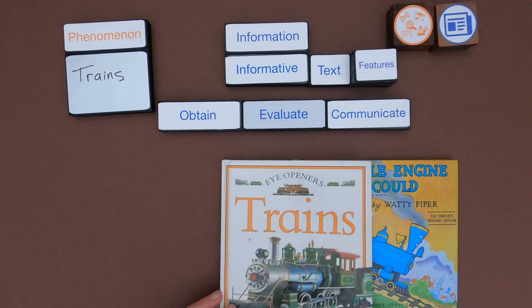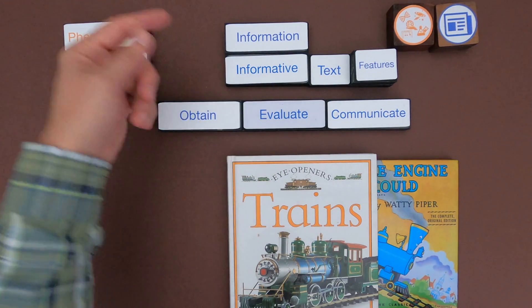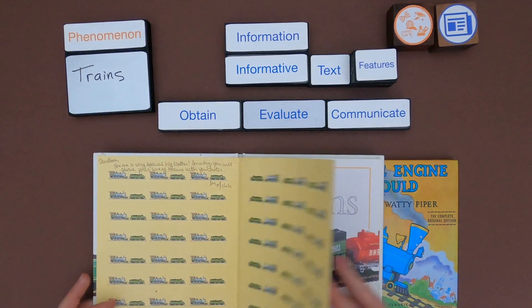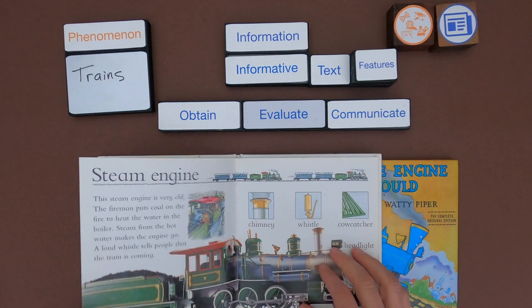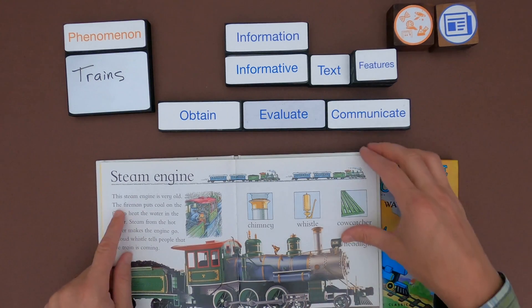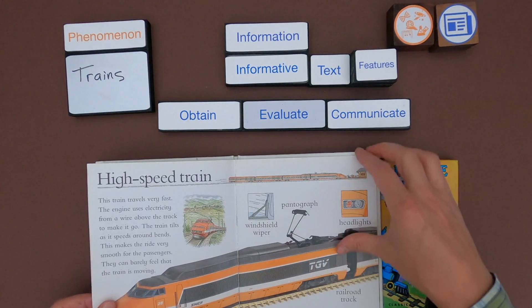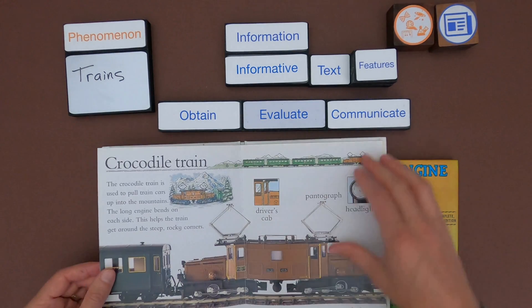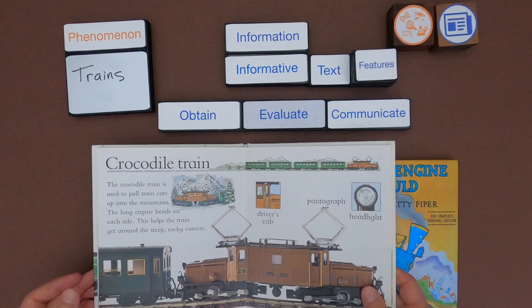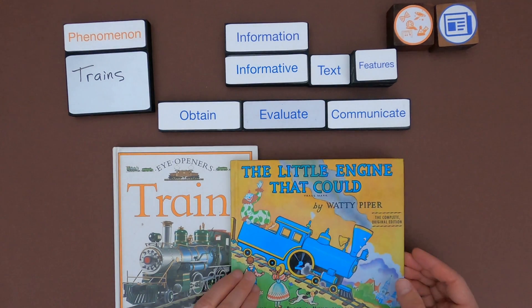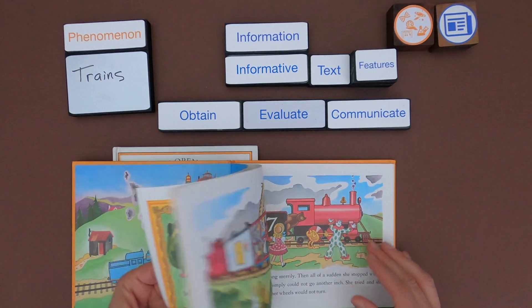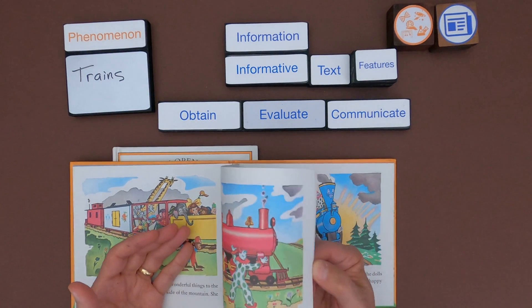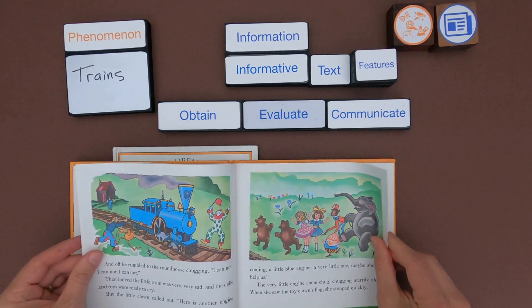The first thing you're going to look at is evaluating if these are both informative texts. Remember, informative texts are designed to give you factual information. Looking at the first one on trains, one big indicator of informative texts is a table of contents — I don't see that here, but we've got information on steam engines, which are very old and use coal, and high speed trains that travel very fast. As we look through, this is just giving us information about different trains and how they work, so I think this is informative text. Looking at the next one, 'The Little Engine That Could' — there's a red train that gets stuck, other engines come by, and eventually the blue engine gives them a ride up and over with that famous 'I think I can, I think I can.'